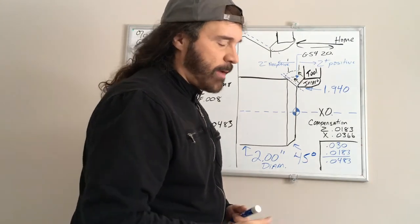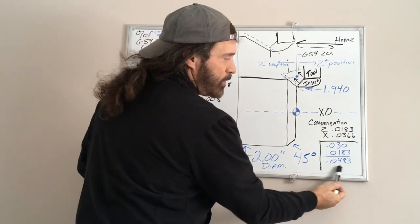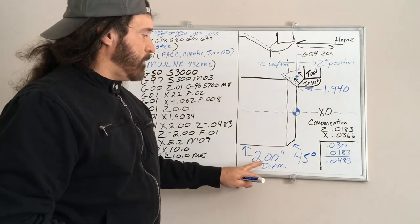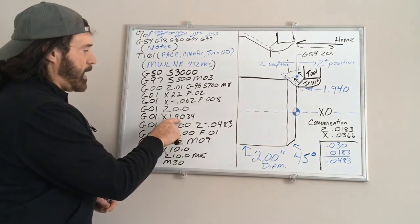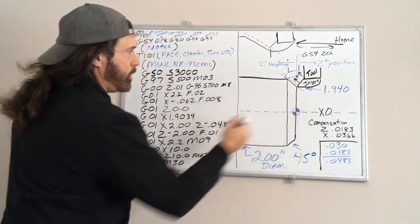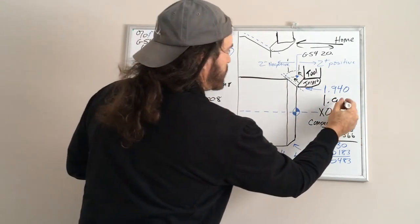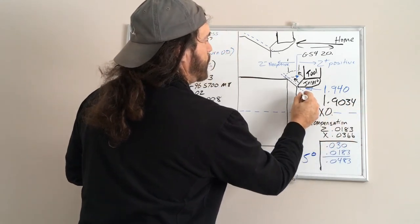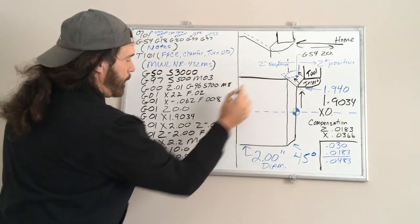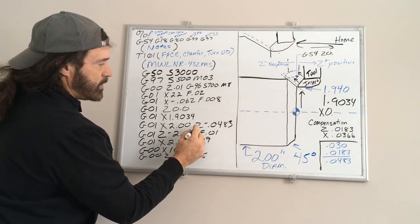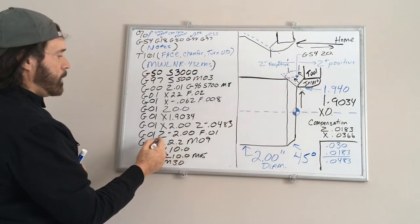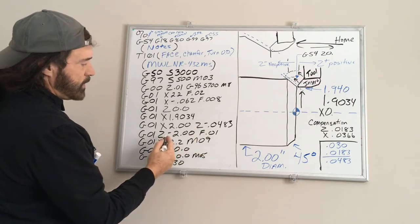Just remember all you're going to do is take your Z dimension if you're doing a 45, just take this number, multiply it by two, subtract from your finish diameter and that gives you that. From there, now we already came up to this dimension 1.9034, so we're coming up. Now we're going to go to X2.0 so we're going to go up to the two inch diameter, and there's our Z dimension Z negative 0.0483. So now we're coming up that way and then we're just going to finish it out. I just made this up - Z negative two inches that way.